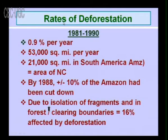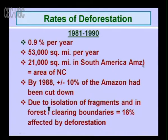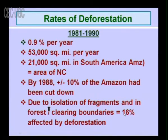Regarding the rate of deforestation, from 1981 to 1990 it was 0.9 percent per year — that is 53,000 square miles per year, with 21,000 square miles in South America, specifically the Amazon forest, an area equal to New York City. By 1988, around 10 percent of the Amazon had been cut down. Due to isolation of fragments and forest clearing boundaries, 16 percent was affected by deforestation. In one decade from 1981 to 1990, around 16 percent of the forest was affected.